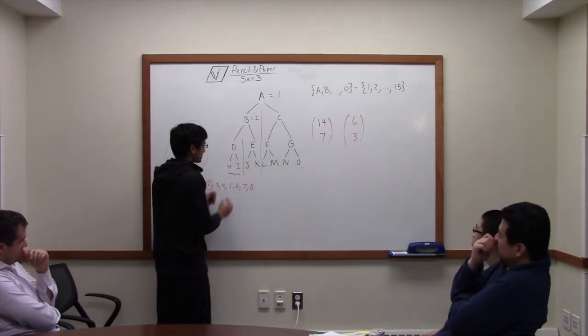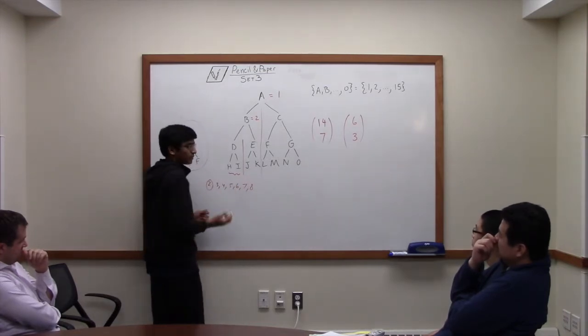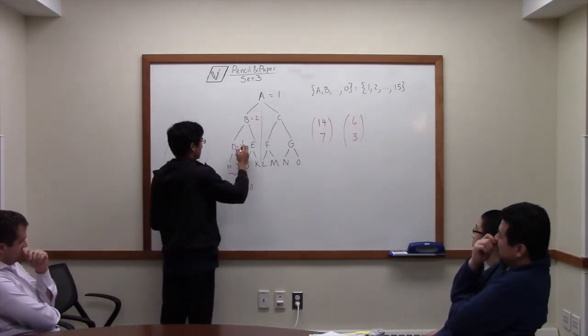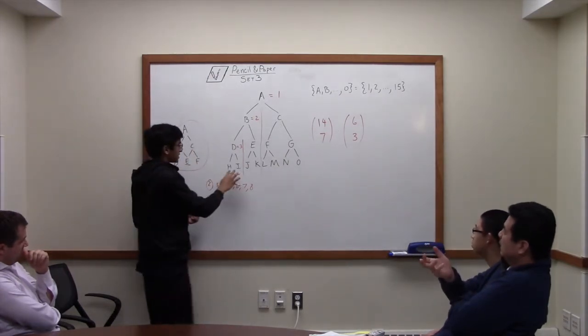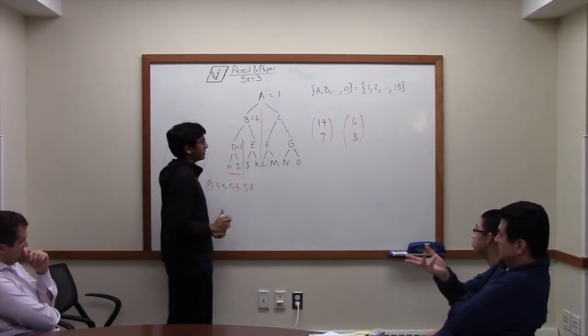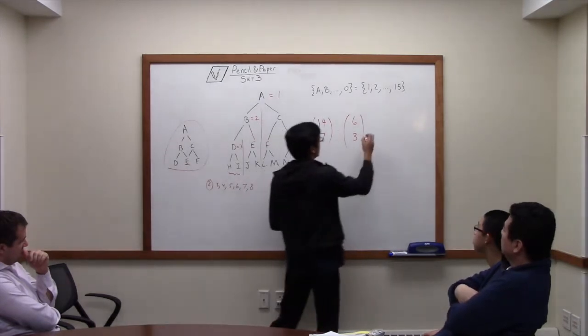And then once we've picked our three numbers, say they are going to be four and five, currently D has to be three. The smallest one. Because it's the smallest one. And then this can be four, five, or five, four. It doesn't matter. Another two. So we multiply by two.